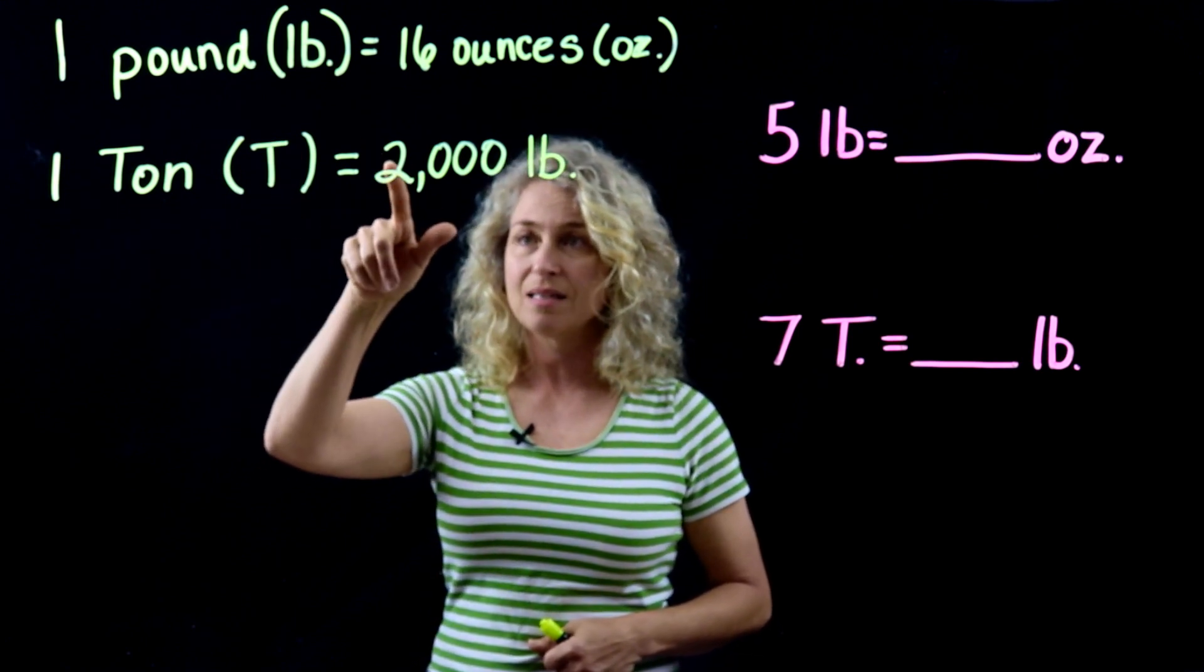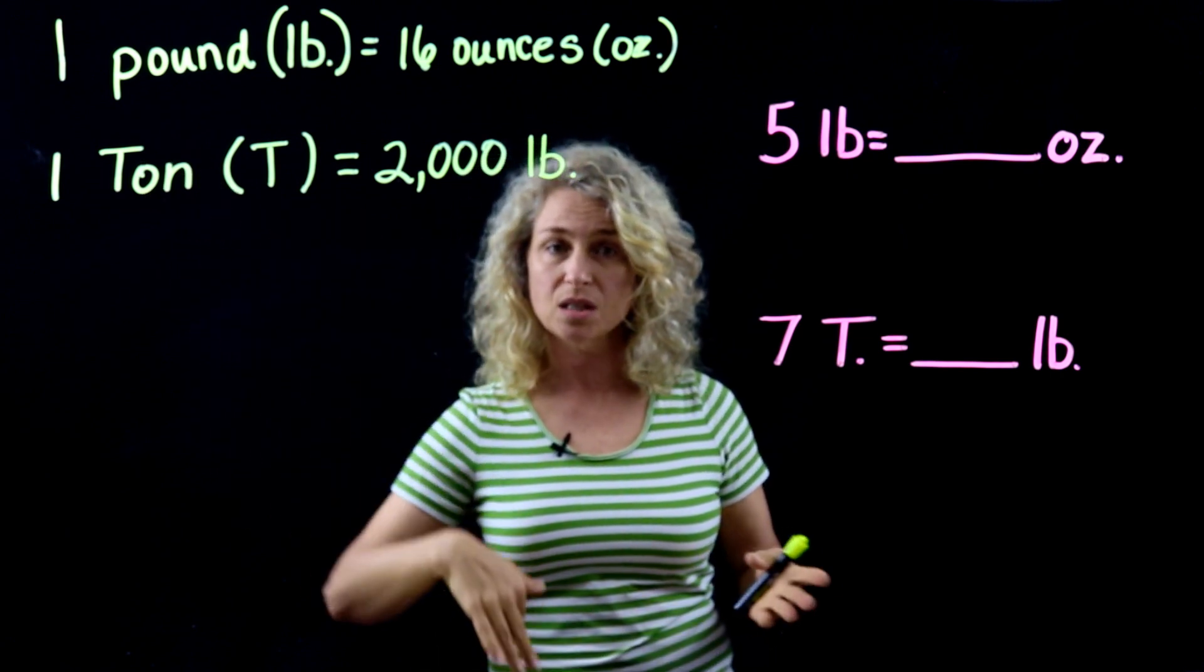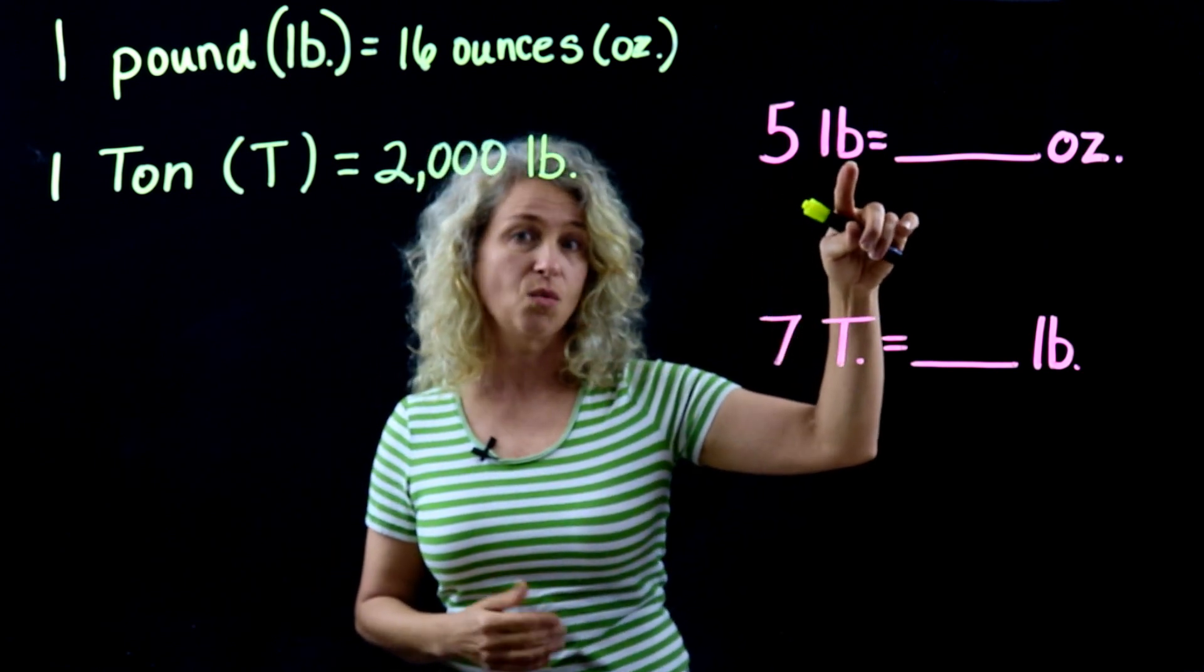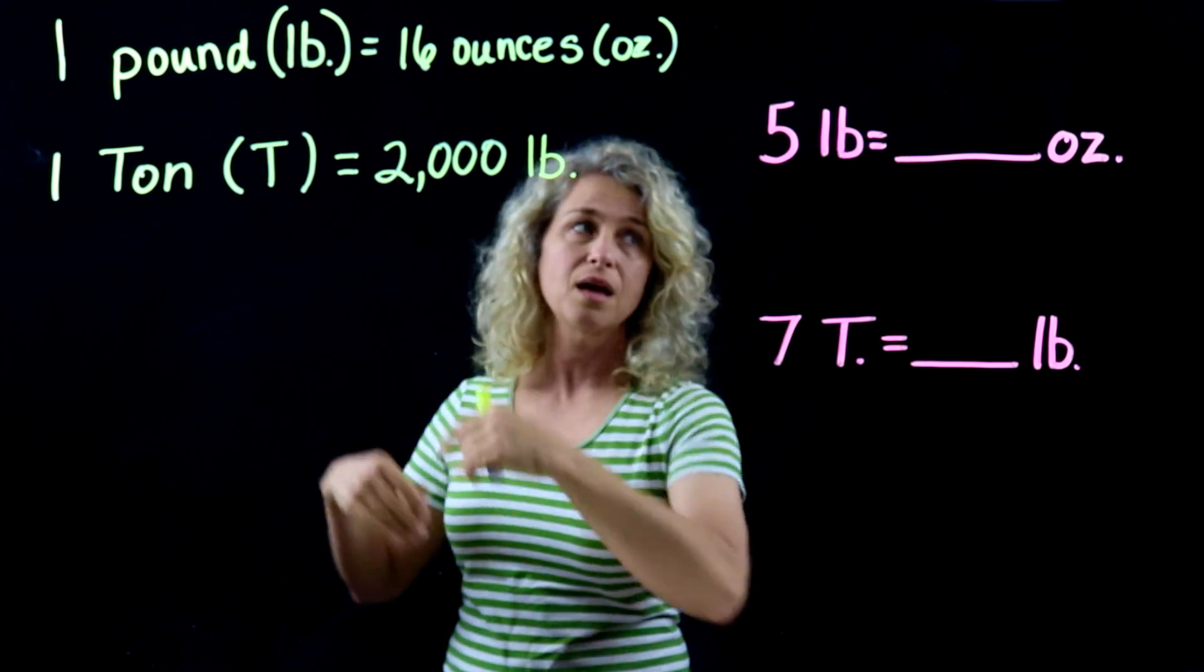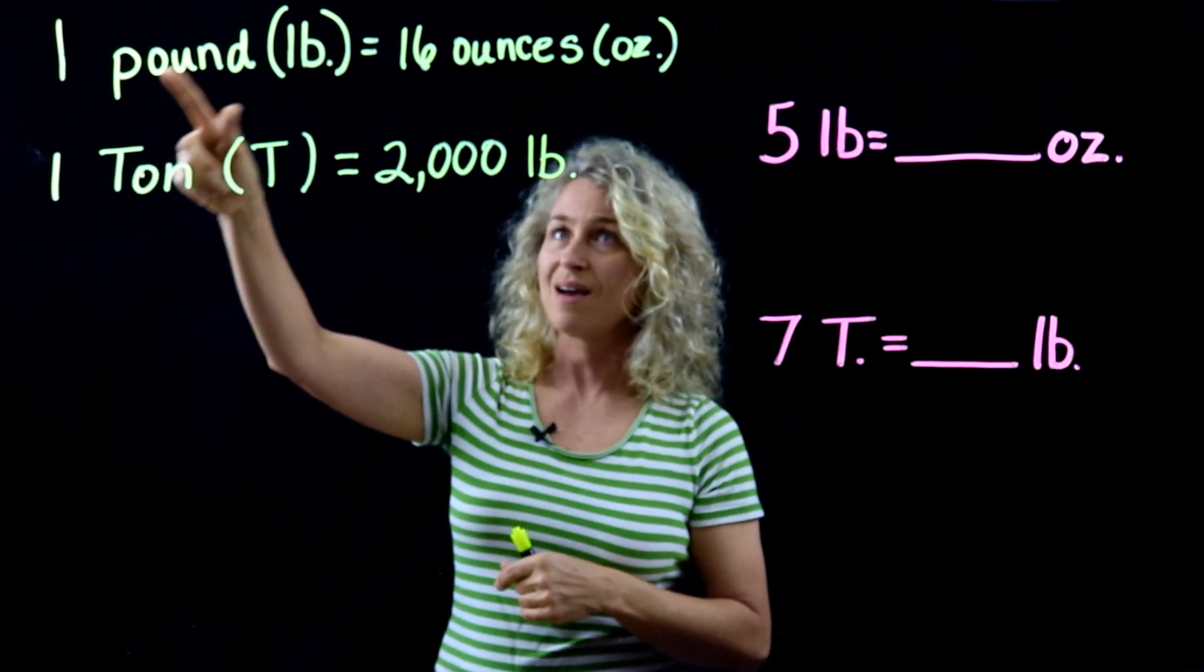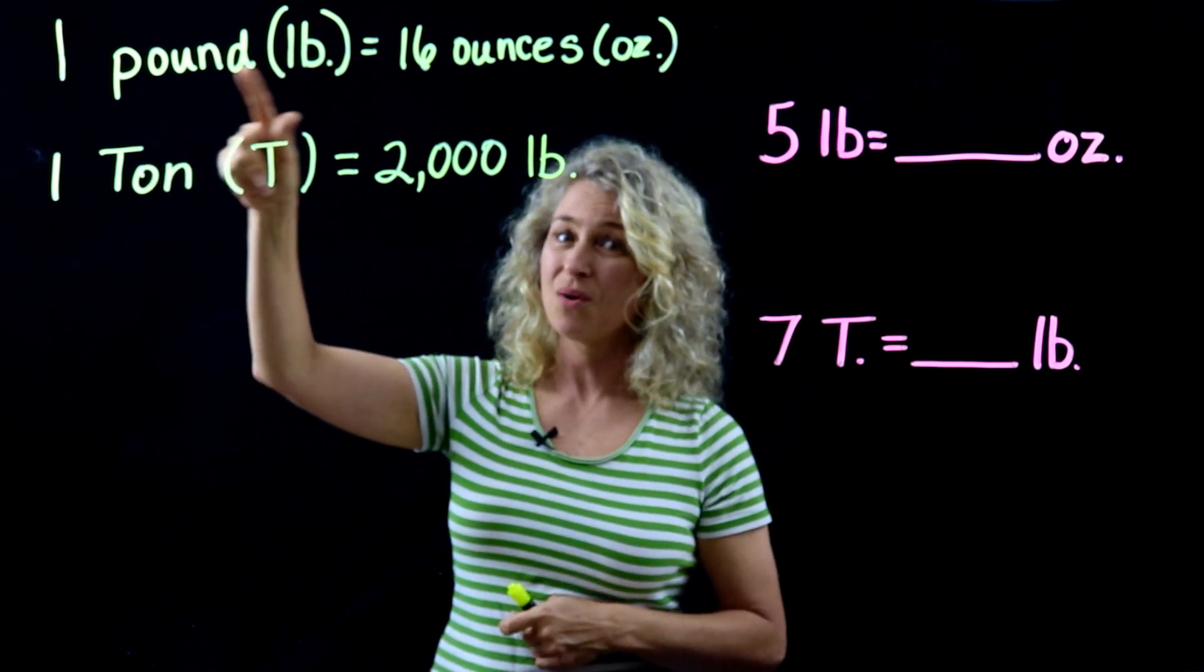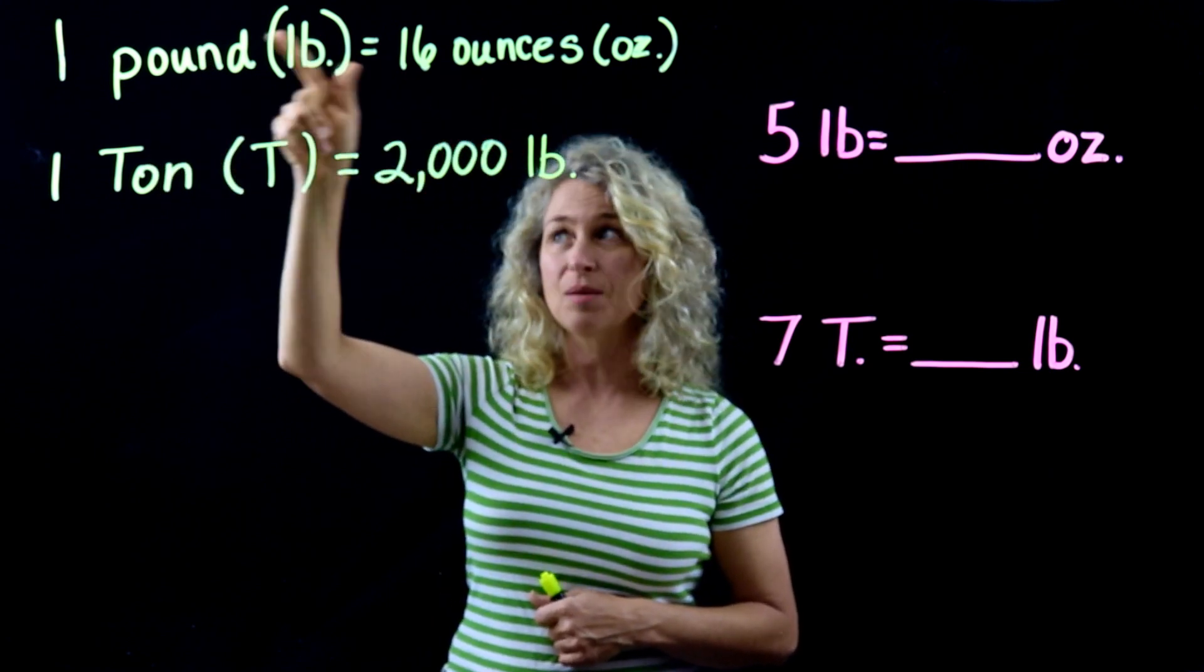So here's a couple quick examples. If you have 5 pounds and you want to convert that to ounces, look at your chart and you're going to use the pounds to ounces conversion. Now a pound is more than an ounce because there's 16 ounces in a pound, so we're going from a larger unit to a smaller unit. We're going to multiply.